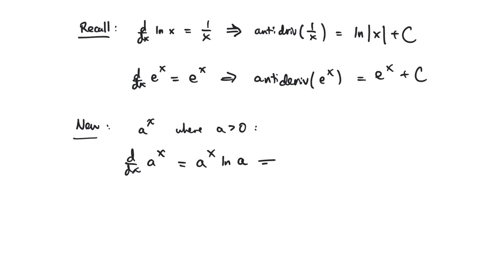From this we get the antiderivative, which would be that the antiderivative of a to the x would be the same thing except this time we have to divide by the logarithm rather than multiply. Think of it again in the socks and shoes sort of analogy.